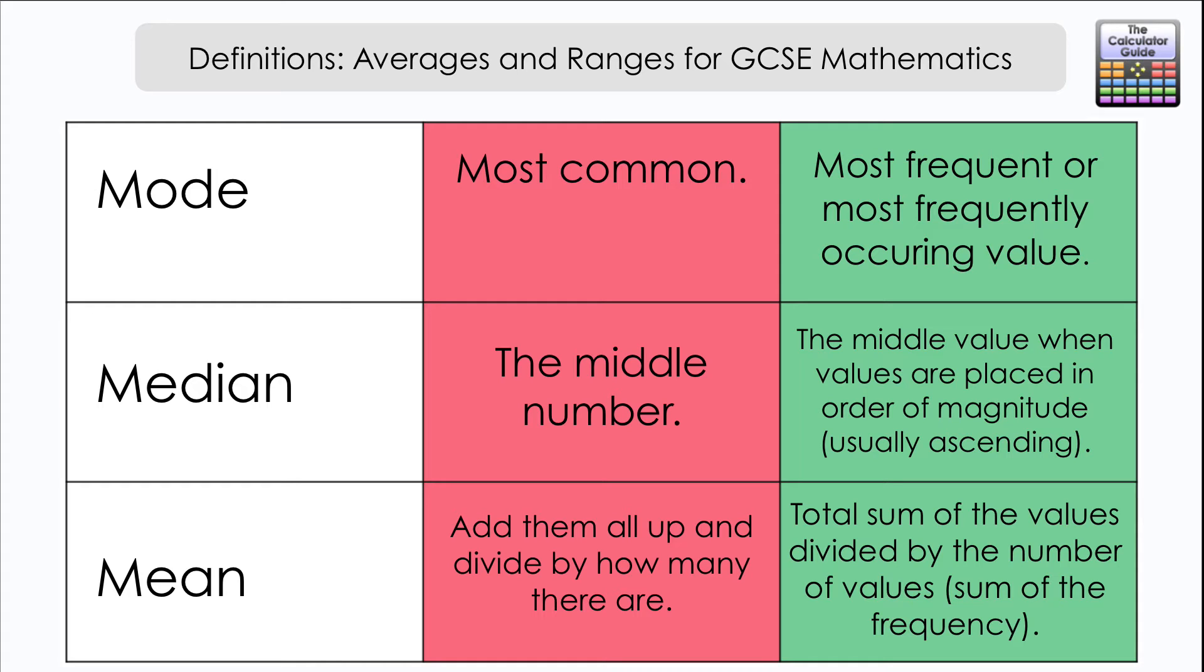If you're not sure or it's not given, you know that you can total the frequency column and that's the number you're dividing by. The total sum of the values, if we're talking about scores in a test for students, that's adding all the scores together and dividing by the number of students. That will average the score for the students in that class.